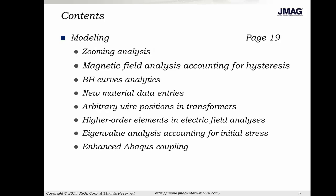In terms of modeling, JMAG has added a separate zooming analysis which allows you to model a small portion of a complex model and incorporate that into a simplified version of the full model. JMAG has also added features to model hysteresis behavior and provided feedback on the quality of custom BH curves. In addition to custom material settings, there are also many new material entries from our material partners. When working on a transformer model, the transformer analysis tool now allows arbitrary wire positioning. In electric field analyses, you can use a higher order element. The structural analysis tool can now account for initial stress in an eigenvalue analysis, and we've also improved the Abaqus coupling in our structural analysis.